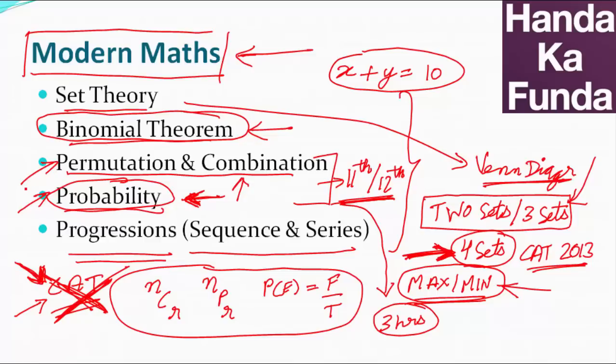And for that, the difficulty level is very low. On the other hand, if the amount of time that you are planning to invest in P and C and probability, if you split that time and you put it in sequence and series or progression sort of topics, you are going to benefit a lot more.